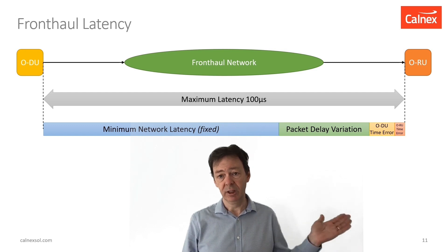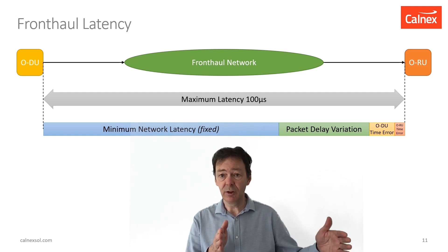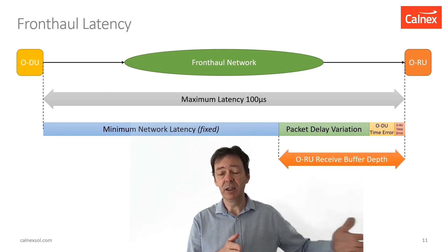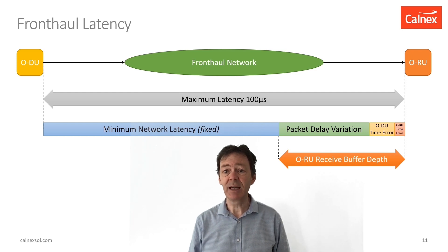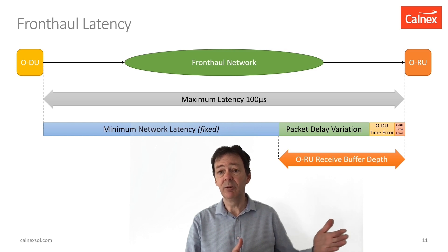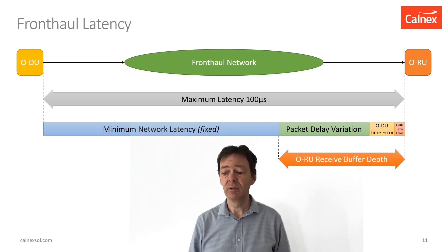The RU, on the other hand, will have a receive buffer, and that's to hold packets as they come into the device ready for playout. That buffer has to be big enough to accommodate the maximum variation possible. So the time error between the DU and the RU also has to be accommodated within the size of that receive buffer.